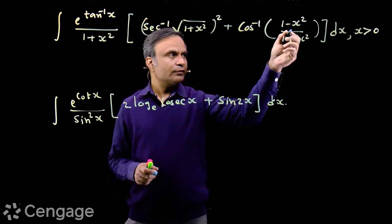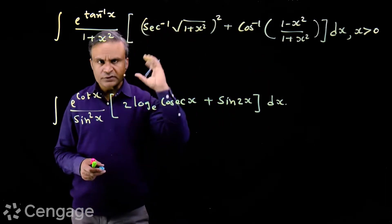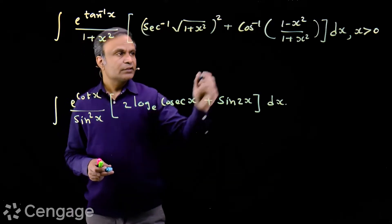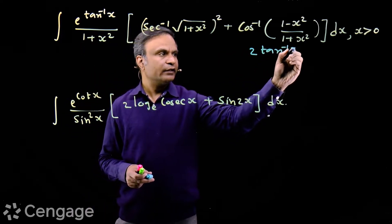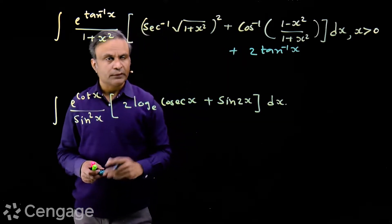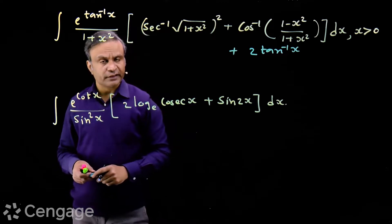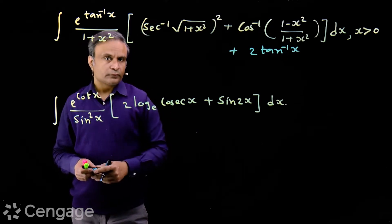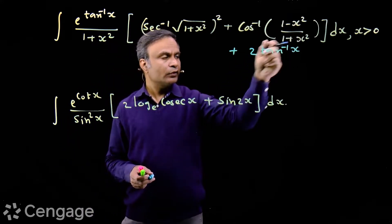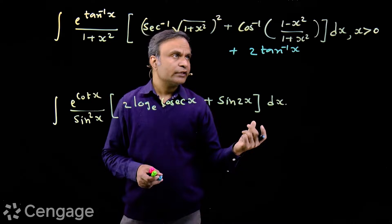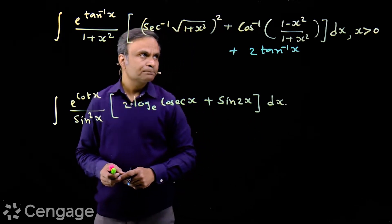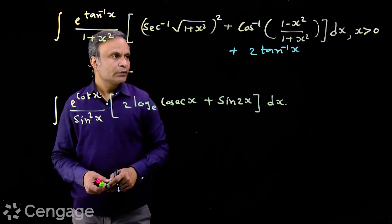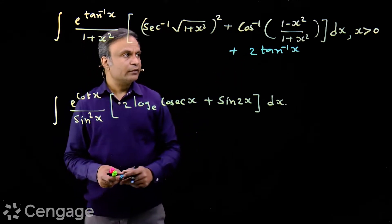What is cos⁻¹((1−x²)/(1+x²))? This is straightaway 2tan⁻¹x. How do we derive it? We put x = tanθ, so we have (1 − tan²θ)/(1 + tan²θ) which equals cos 2θ. So cos⁻¹(cos 2θ) = 2θ. This equals 2tan⁻¹x.